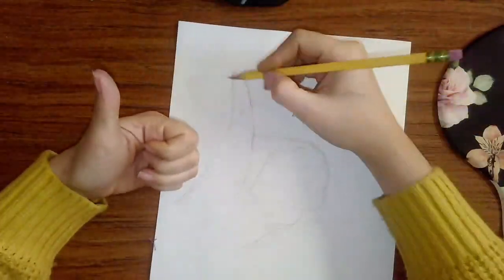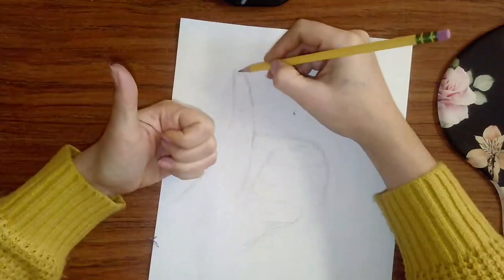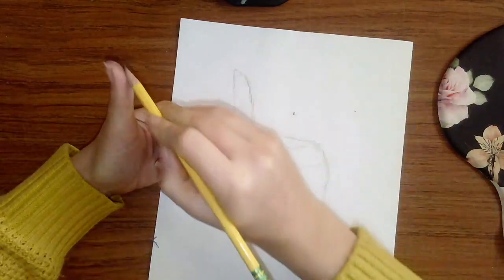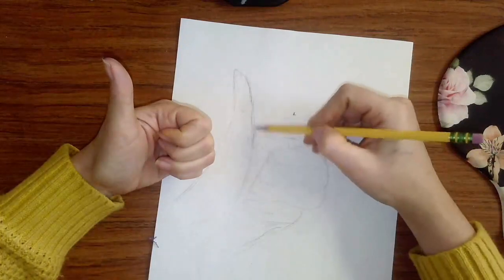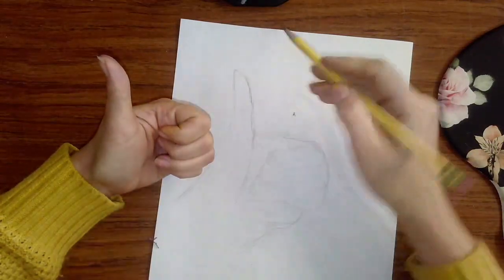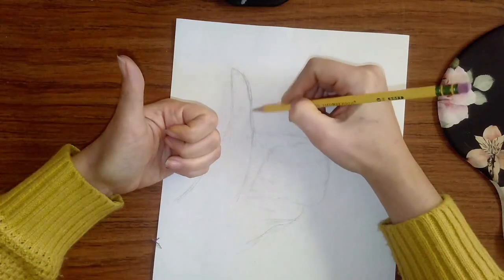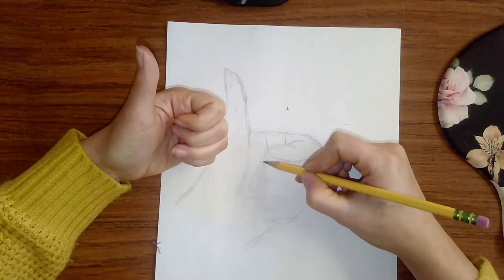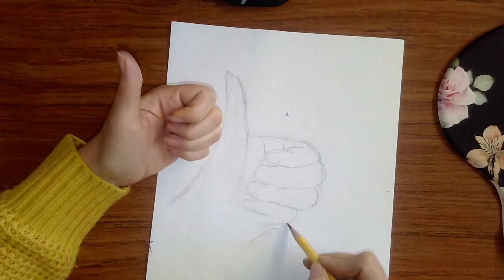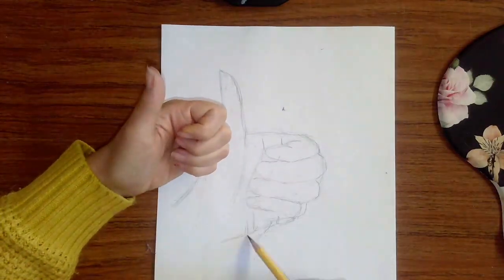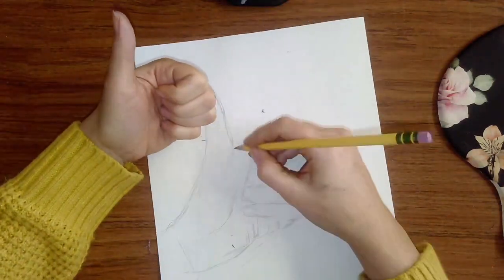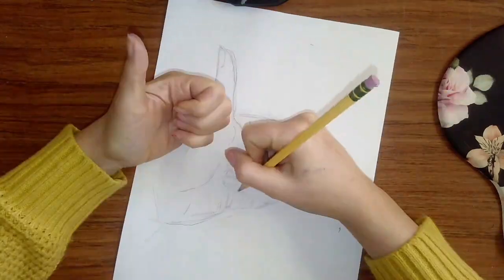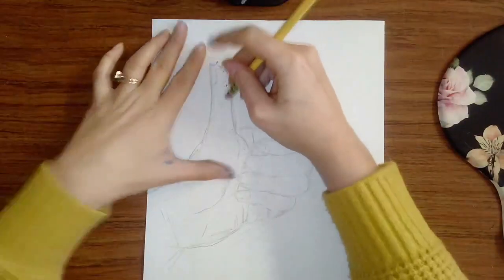All right. Now I can start looking a little bit more into those details. So I'm still not going crazy with the details. I'm just still kind of focusing on the edges. What kind of lines do I see? So I see like my thumb curves in a little bit here. So I'm going to try and show that.